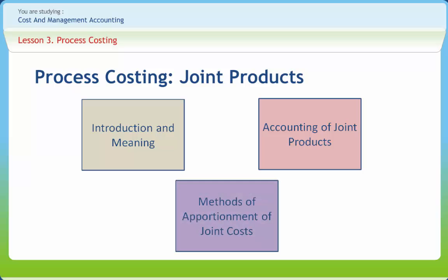The average unit cost method is the simplest method to adopt in determining the cost of joint products. Under this method, the cost per unit of the joint products will be uniform because the process is common for all products and cannot be separated for one single product. In such cases, the cost per unit will also be the same, and pricing is done uniformly for all products irrespective of the grades or qualities at which they are produced.